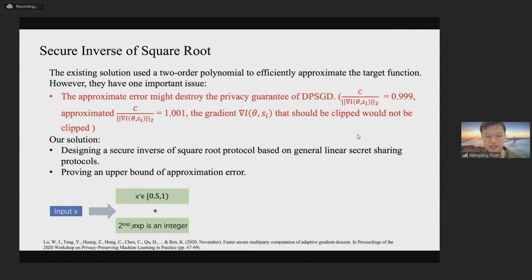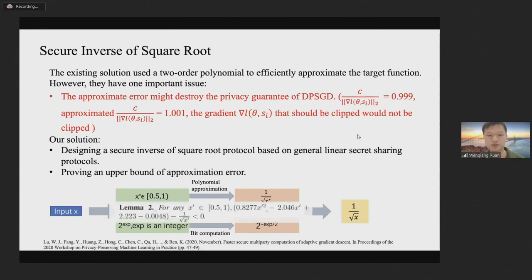At first, we decompose input x as x star times 2 to the exp, where x star is in the interval 0.5 and 1 and exp is an integer. After that, we use a low-order polynomial to approximate 1 divided by the square root of x star and the square root of 2 to the exp. We then multiply the two computation results to obtain output. We also prove an approximation upper bound of our approximation polynomial is 0.0048. Then we minus 0.0048 from the approximation results to ensure that all approximated result values are smaller than the true values such that all gradients that should be clipped will be clipped.